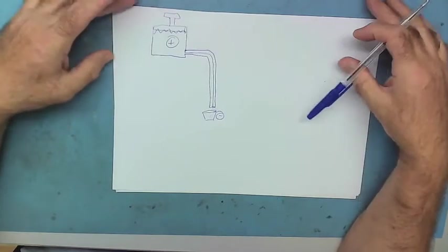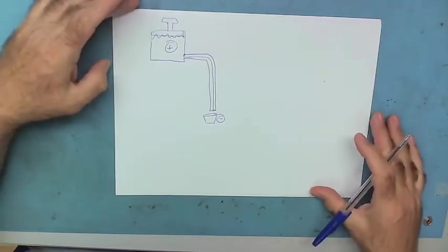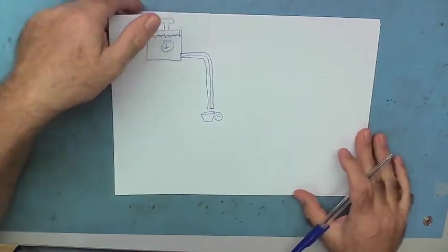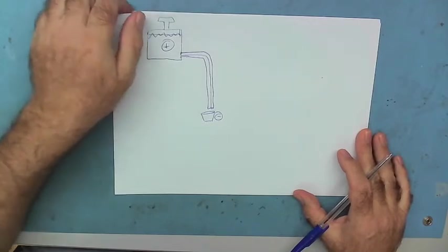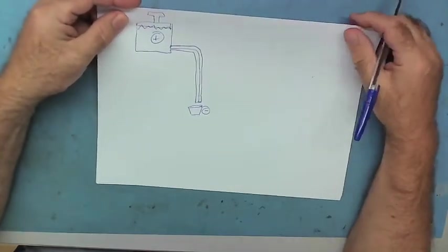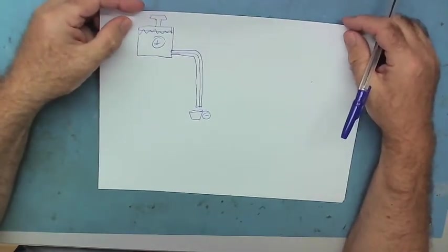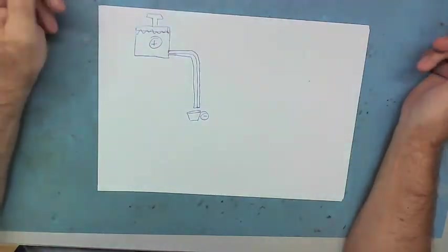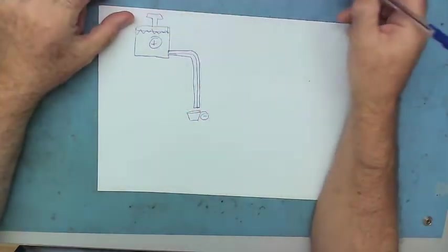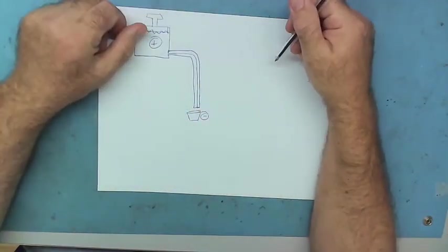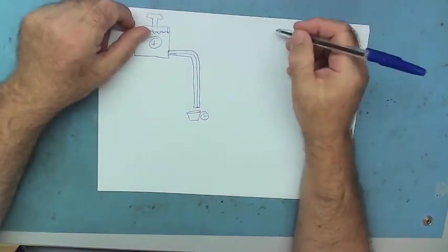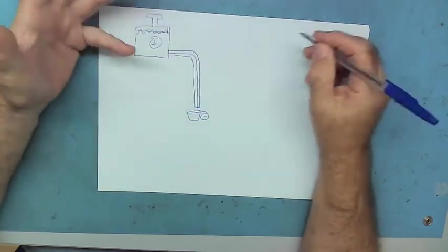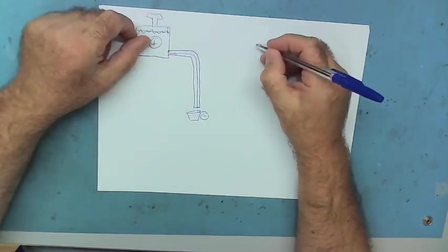Around 1800, a guy named Volta invented the battery, the modern battery which uses a chemical reaction to produce electricity. Very clever guy. So we now have batteries and they started putting together circuits and started to experiment. Here's a battery, plus minus, and we'll stick wires across here.